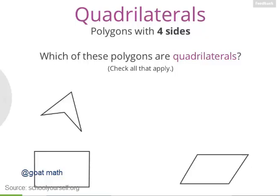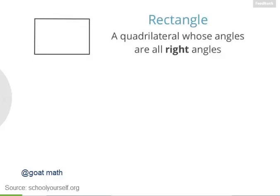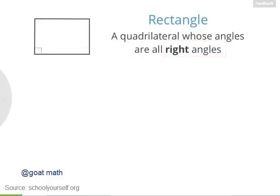Let's take a closer look at this quadrilateral over here. This is an example of a special kind of quadrilateral called a rectangle. A rectangle is a quadrilateral whose angles are all right angles. And as you can see, all four of these angles here are right angles.